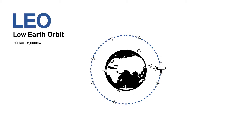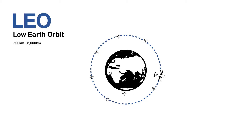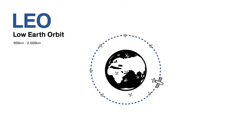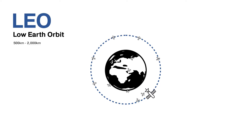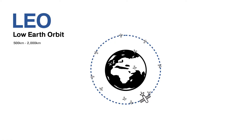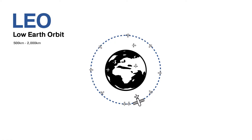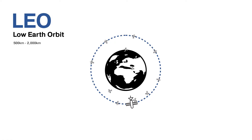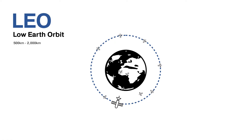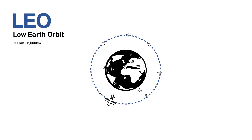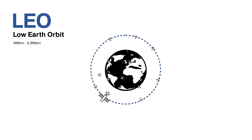But because LEO is so close to the Earth, atmospheric effects will cause gradual orbital decay. So it will require regular maintenance of satellites to keep them on track in Low Earth Orbit.